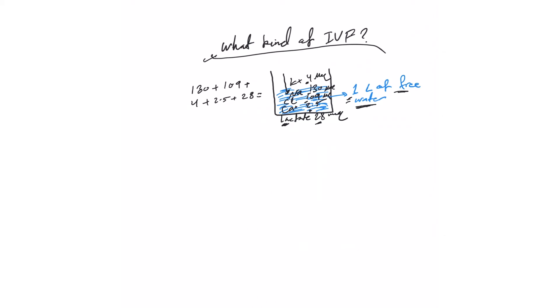To calculate the osmolarity of this solution, you just add 130 plus 109 plus 4 plus 2.5 plus 28, and this will be around 270 milliosmoles per liter. This is pretty close to 290.